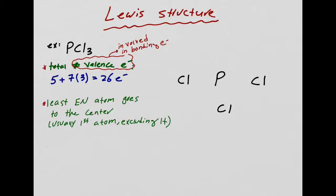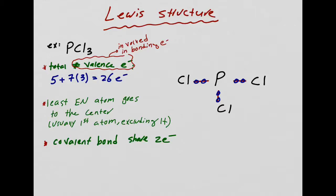Now you're going to draw a bond between the center atom and the surrounding atoms. Each covalent bond shares two electrons — so this bond is sharing two electrons, this one is sharing two electrons, and this one is sharing two electrons.